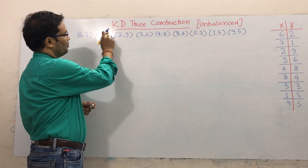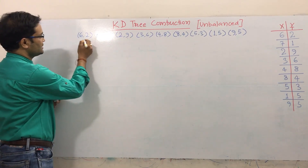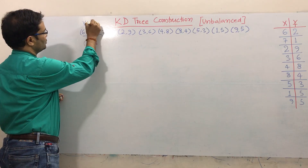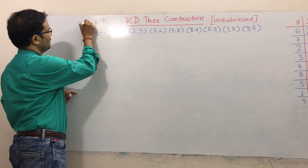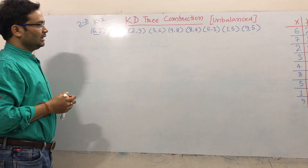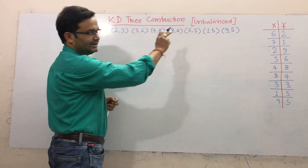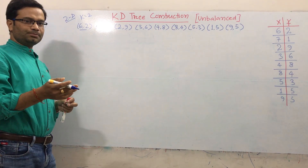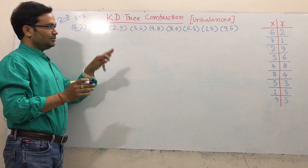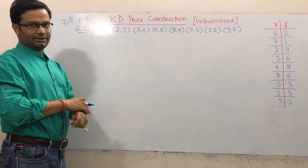K means how much value you have and D means dimensional. In this case, each pair has two values, so K is equal to 2. So we are going to construct a 2D tree. One thing I want to say: this is the unbiased KD tree. In the next video I will explain what is biased or unbiased, but this video is based on the unbiased KD tree.